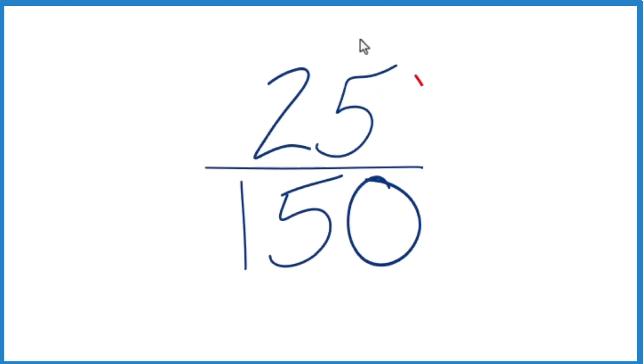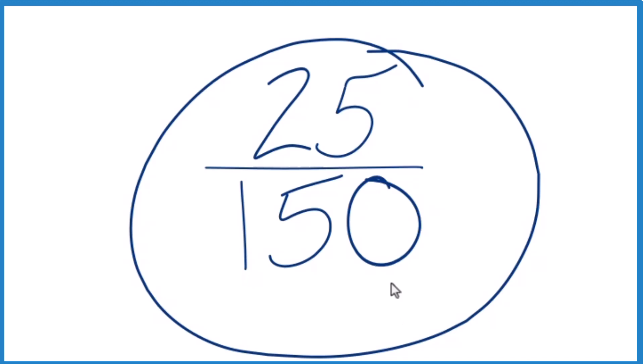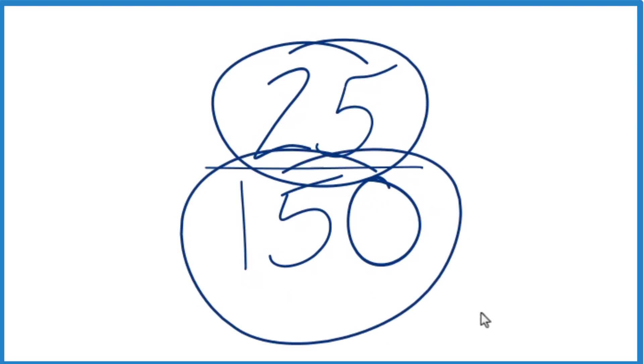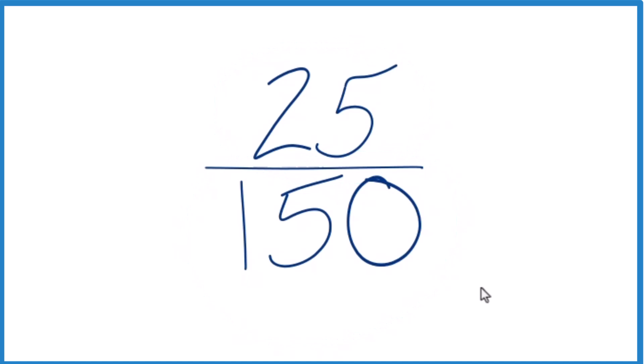Let's simplify the fraction 25 over 150 down to simplest terms. To do that, we're looking to find another fraction that's equivalent to 25 divided by 150. It has the same decimal value, but we've simplified it to lowest terms.